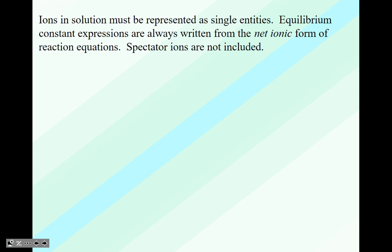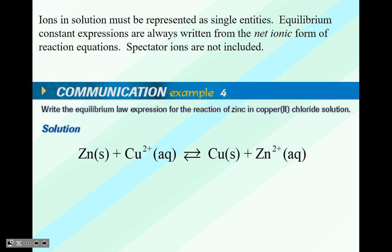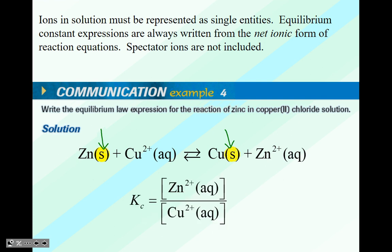Ions in solution must be represented as single entities, and equilibrium constant expressions are always written from the net ionic form of the reaction equation. Spectator ions are not included. For example: write the equilibrium law expression for the reaction of zinc with copper chloride solution. We have solids here, so we don't include those — we only use the ions, and it's still products over reactants, but we don't include solids or liquids except for water.